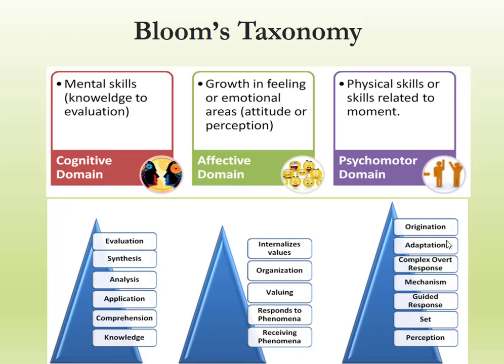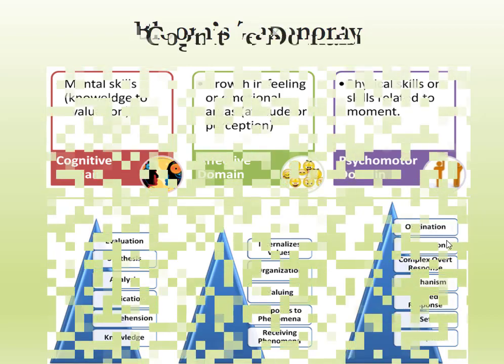There are basically three domains: cognitive domain, affective domain — which relates to growth in the feeling or emotions area, attitude and skills, attitude and perception — while psychomotor domains are related to physical skills or skills related to movement. In detail, we will talk about Bloom's Taxonomy, especially the cognitive domain.